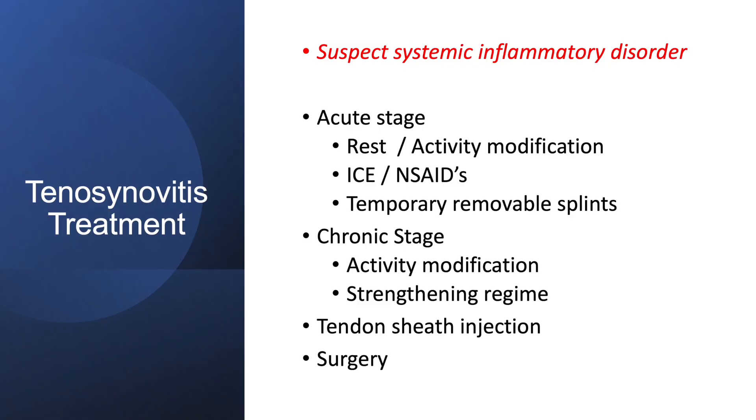Treatments are very similar across these tenosynovitides. Importantly, suspect a systemic inflammatory disorder — rheumatoid arthritis has a high propensity for developing tenosynovitis. If somebody has bilateral symptoms without a clear overuse history, consider sending routine blood tests. Sonography can be very helpful here: placing a probe over the area of discomfort often reveals inflammatory changes within tendon sheaths, particularly extensor carpi ulnaris tenosynovitis, which on ultrasound is one of the earliest features of early rheumatoid arthritis.